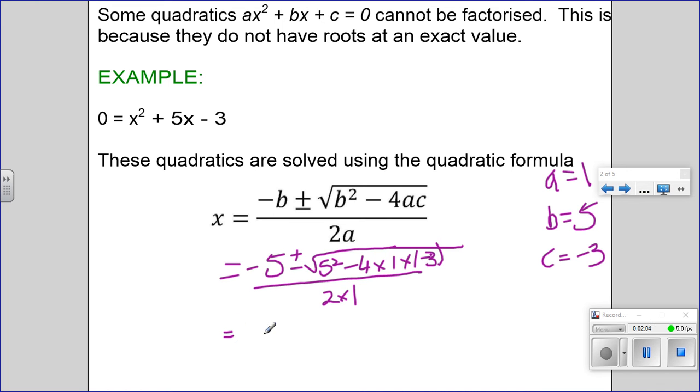And then as I simplify this I am going to separate it. So I am going to get -5 + √37 over 2.